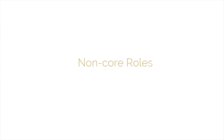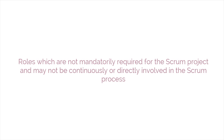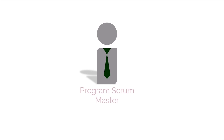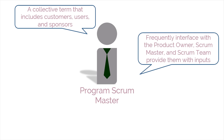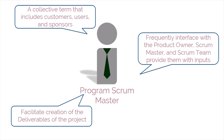Let's now move on to talk about the non-core roles. Non-core roles are those roles that aren't mandatory for the Scrum project and may not be continuously or directly involved in the Scrum process. One such role we're going to discuss here is the stakeholder role. Stakeholder is a collective term that includes customers, users, and sponsors who frequently interface with the product owner, Scrum Master, and Scrum team to provide them with input and to facilitate creation of the deliverables of the project.